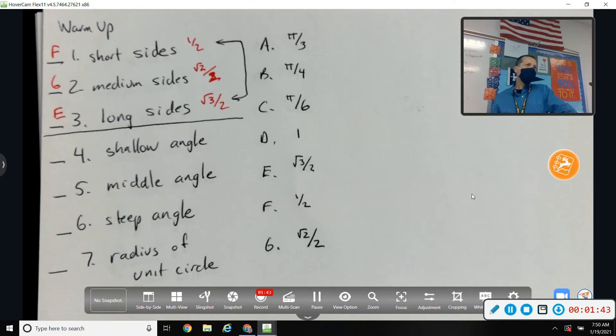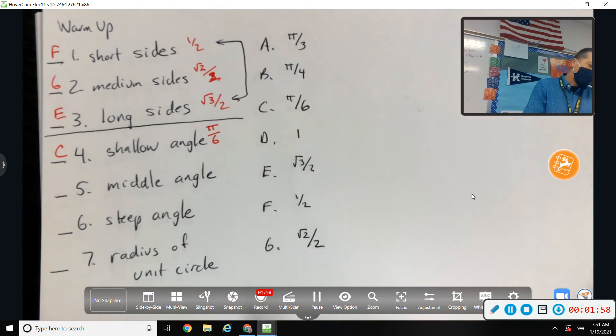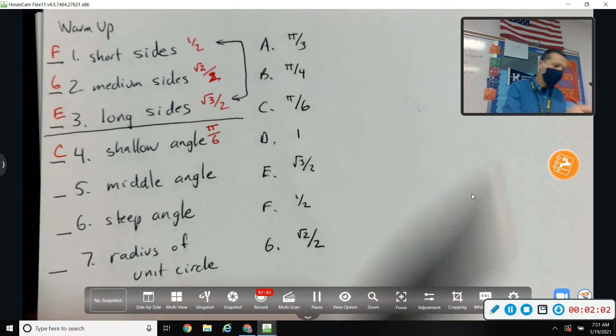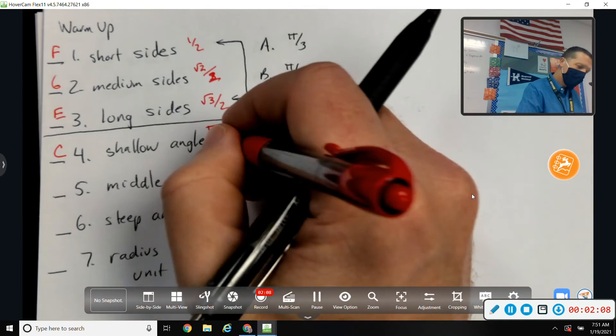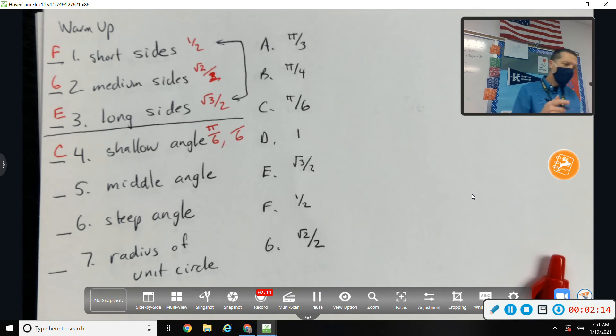The shallow angles, what are all the shallow angles? Let's start calling on names here. What are all the shallow angles? Pi over 6. And what I thought about putting was not just pi over 6, but you could put, like, in pi over 6. Anything over 6 is going to be a shallow angle. So 5 over 6, 7 over 6, 11 over 6.